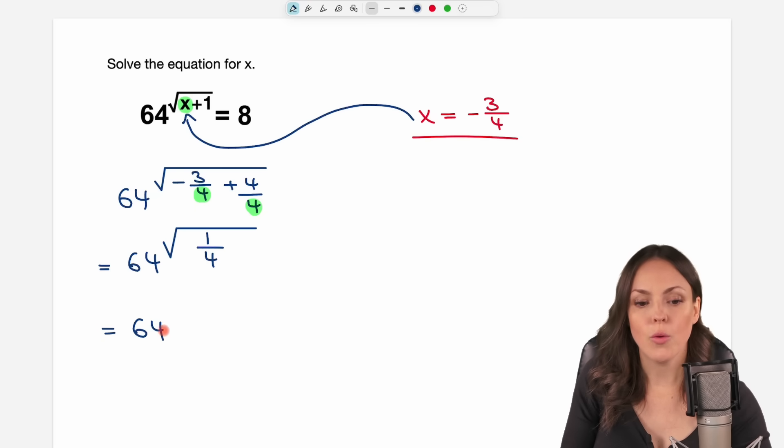64 and the square root of 1 over 4, we can calculate that. The square root of 1 just equals 1, and the square root of 4 just equals 2. 64 to the power of 1 over 2. What is that? Well, the power of 1 over 2, you can always write this as the square root of 64.